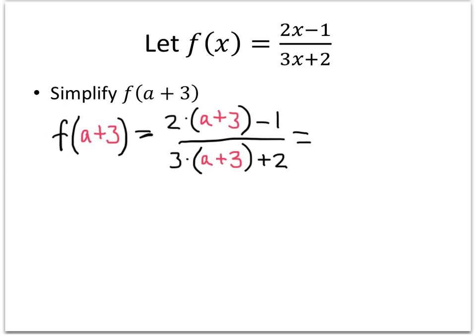So first we're going to distribute this 2 across the parentheses, the a plus 3. That's going to give us 2a, 2 times 3 is 6, minus 1. And on the bottom, we're going to distribute again. 3 times a is 3a, 3 times 3 is 9, and then plus 2.